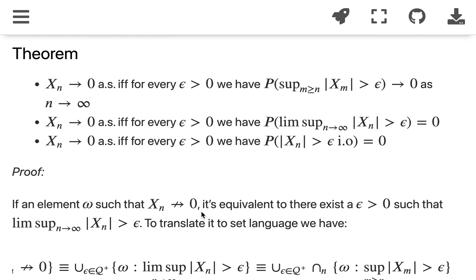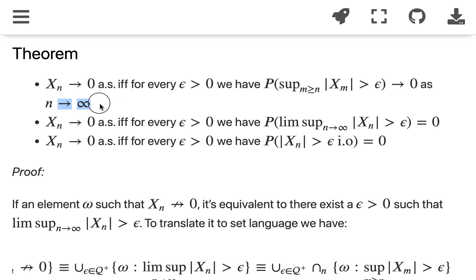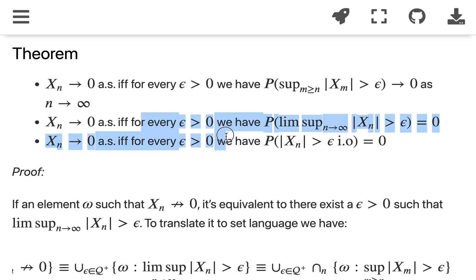The next result gives three equivalent conditions. x_n converges to 0 almost surely if and only if: for every ε > 0, P(sup_{m ≥ n} |x_m| > ε) → 0 as n → ∞. The second and third conditions are also equivalent to this one.